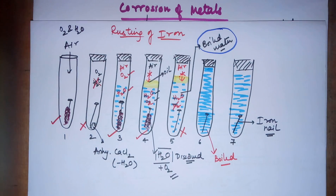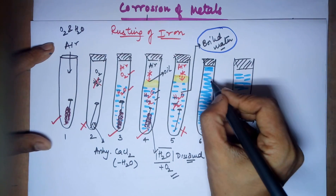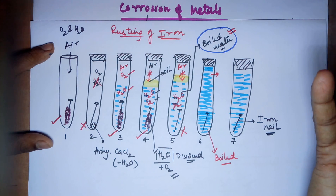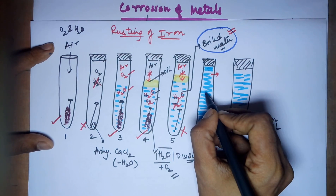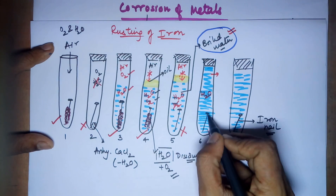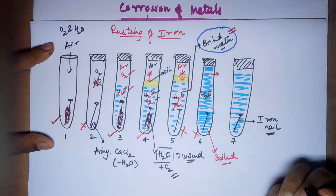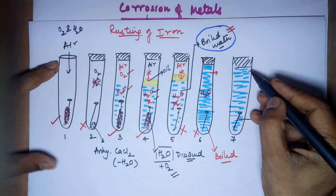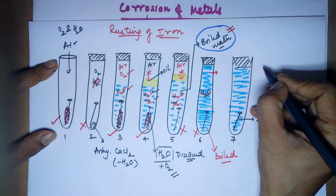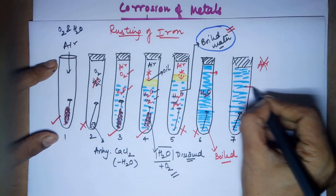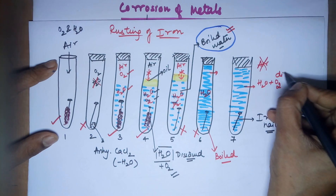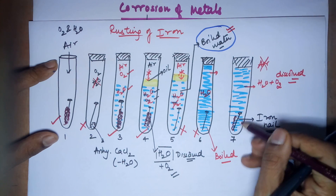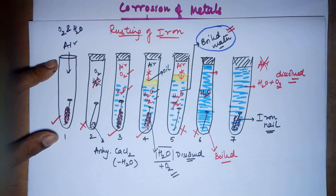In test tube six, there is only boiled water filled up to the brim, meaning no air is inside the test tube. The boiled water has no dissolved oxygen since it escaped during boiling. So there is no oxygen and no rusting in test tube six. In test tube seven, there is normal water filled up to the brim — no air — but any normal water sample has dissolved oxygen in it, so you again have both water and oxygen.